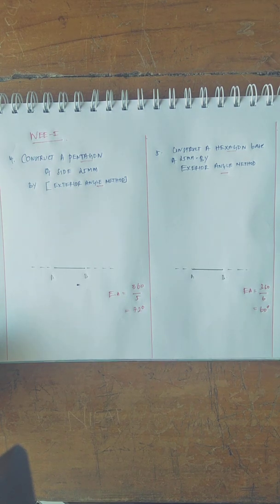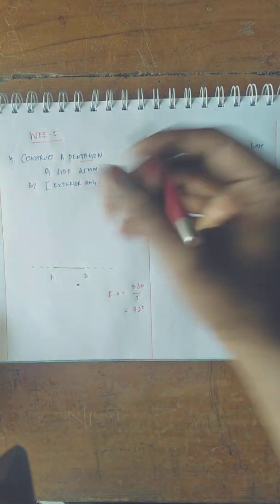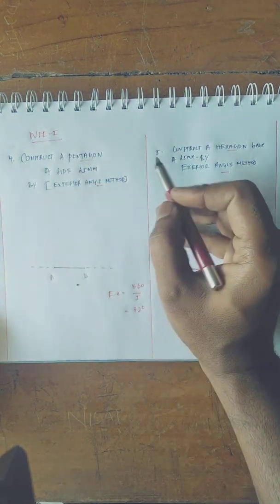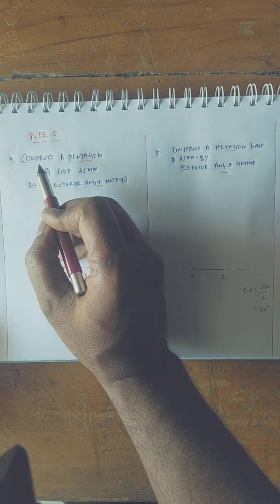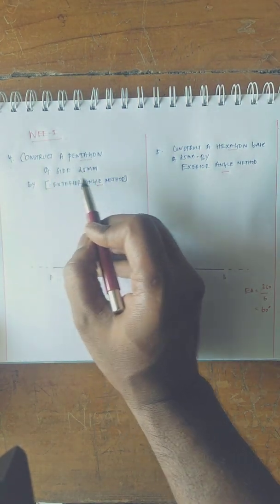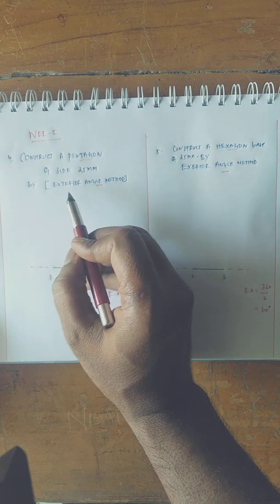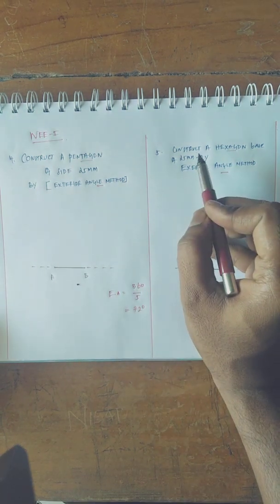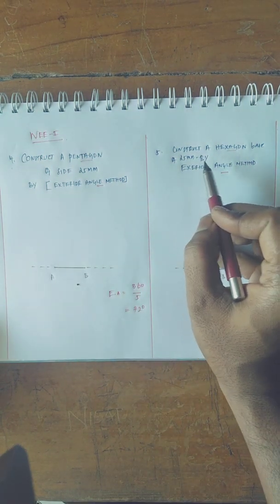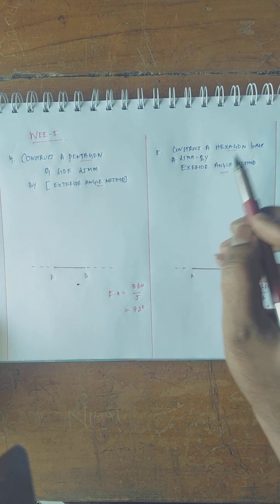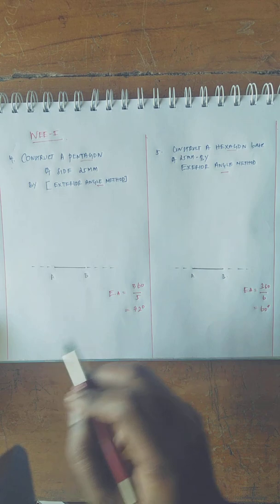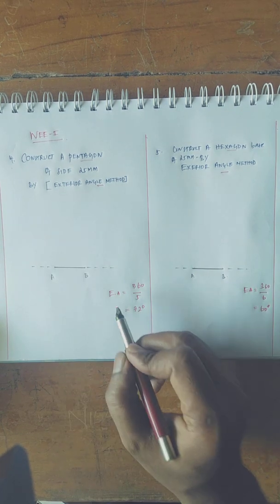Students, next I will discuss problem number 4 and 5 simultaneously. I will draw problem 4 and 5: construct a pentagon of sides 25 mm by exterior angle method, and similarly construct a hexagon of base 25 mm by exterior angle method. The simple concept to draw an exterior angle is nothing but the exterior angle.